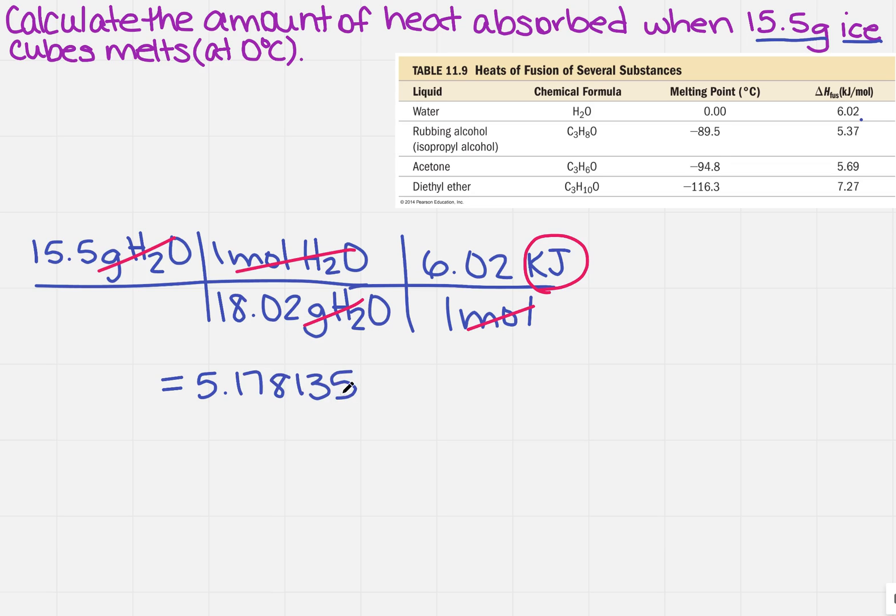But how many significant figures do I need? Well, I go back to the original problem. It says I need 1, 2, 3. So 1, 2, 3. I look at the number to the right. It tells me I'm going to round up, so my answer should be 5.18 kilojoules.